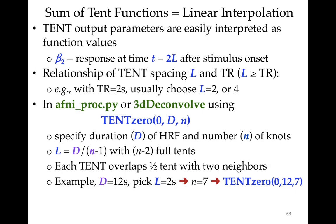The tent output beta parameters are easily interpreted as the function value at a given time — for example, beta2 is the response at time 2L after stimulus onset. The tent spacing L should be bigger than the TR, since it doesn't make sense to resolve shape details finer than the TR, and it should usually be an integer multiple of TR. For instance, if TR is 2 seconds, L could be 2 or 4 seconds.